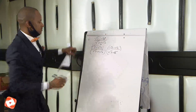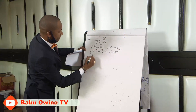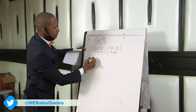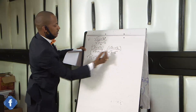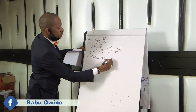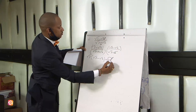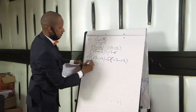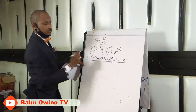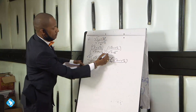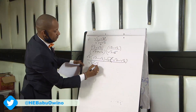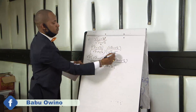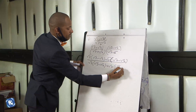Then you expand this. In expanding, we have root 3 times what's on the other side of the bracket: root 3 into root 3 minus root 2. Then again, minus root 2 into root 3 minus root 2. Then you divide by the denominator, which you also expand: root 3 multiplied by root 3 minus root 2, plus root 2 into root 3 minus root 2.